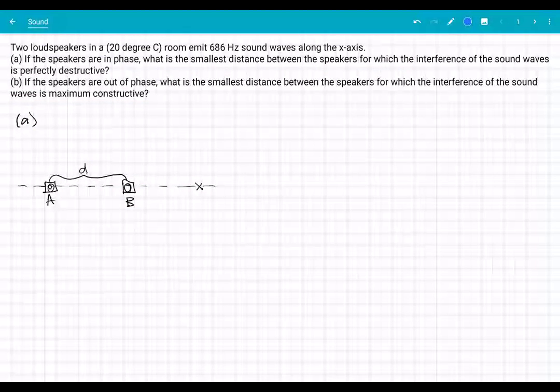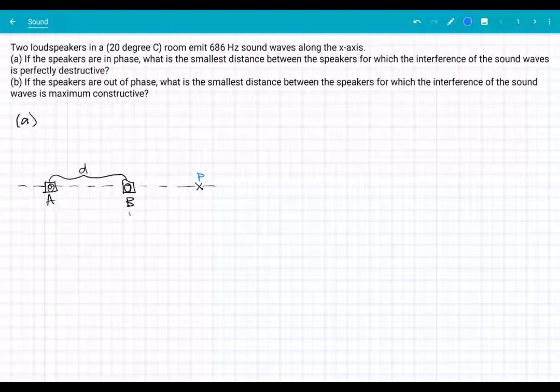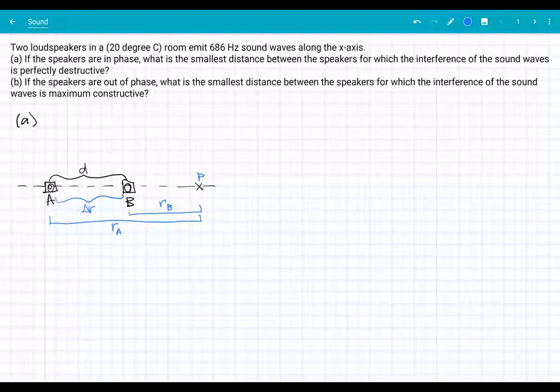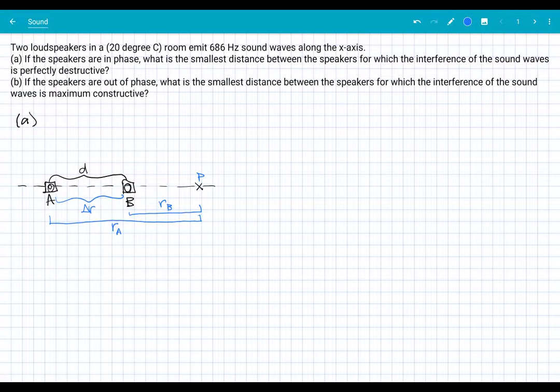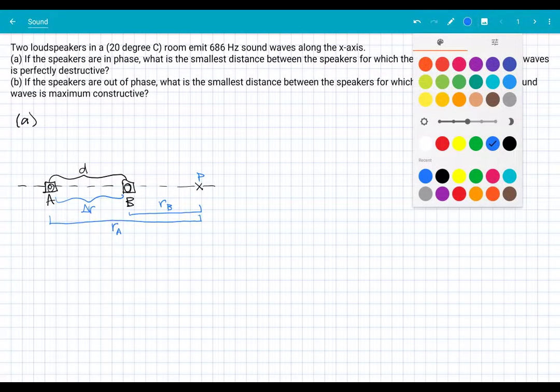For instance, if you look at point P here, this distance would be R sub B, the path length for speaker B. And this distance is the path length for speaker A. So the path length difference, that delta R, is going to be this distance. That path length difference is what we're always interested in when it comes to interference.